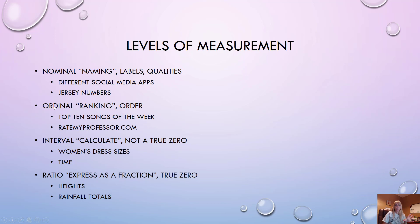Levels of measurement: I typically group nominal and ordinal together. Think of nominal as naming — like jersey numbers. Just because your jersey number is one doesn't mean you're the best. Ordinal has a ranking, like the top ten songs of the week or Rate My Professor — there's an actual ranking to the labels.